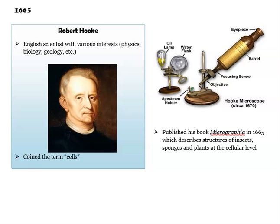In 1665, an English scientist named Robert Hooke published his book called Micrographia, which describes structures of insects, sponges, and plants at the cellular level. He became the first person to use the word 'cells.'